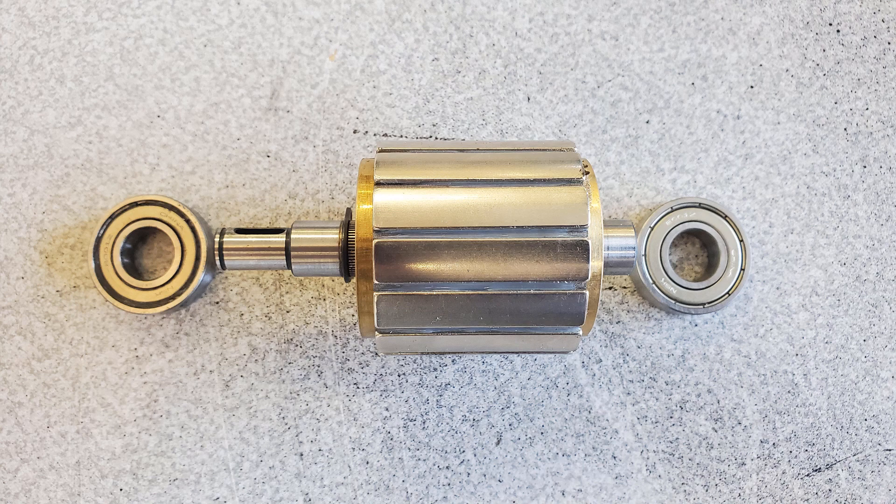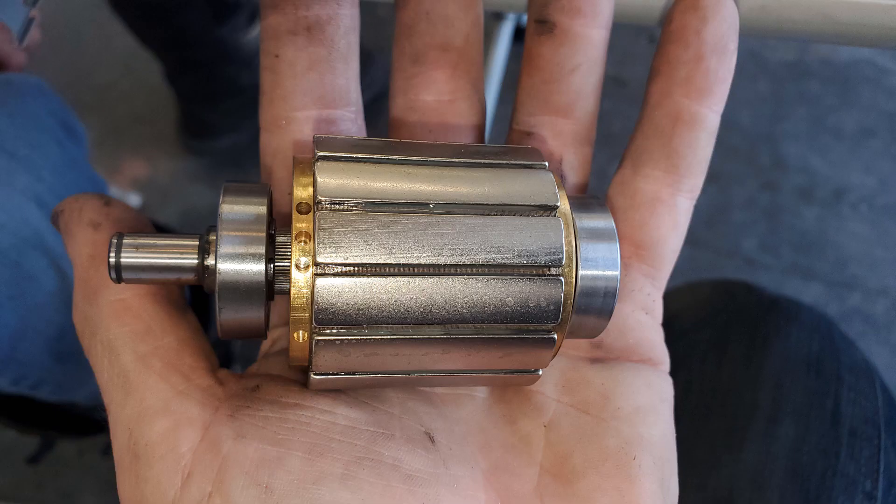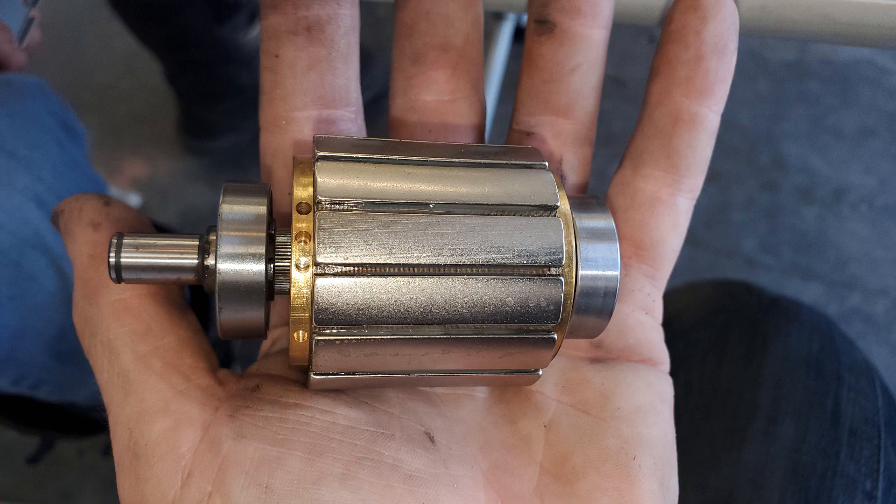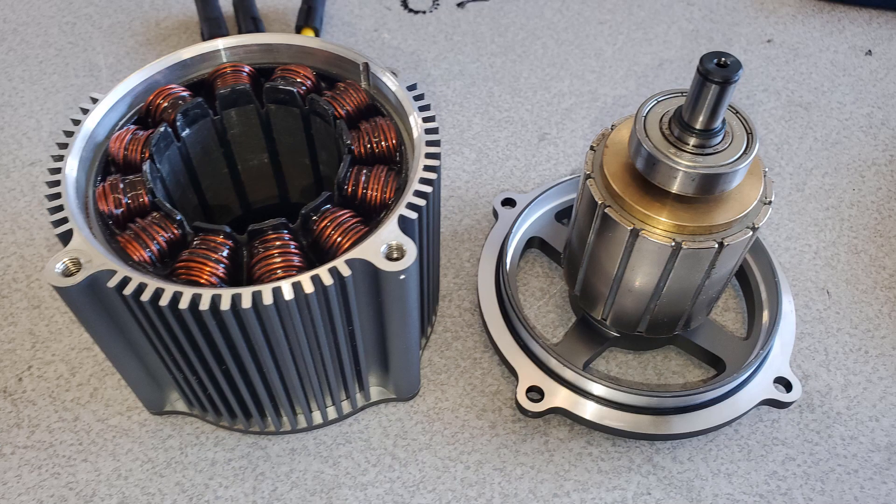Putting the new rotor back in just requires the bearings to be put back into place, and then it would be seated in the end cap and then drop back in. Just watch your fingers when you do it because the pull from the magnet is very, very strong.